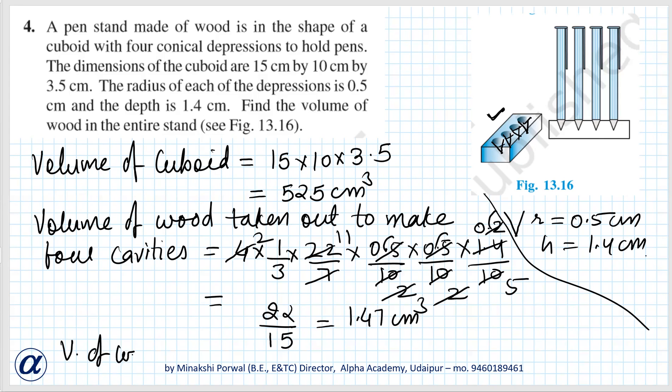Volume of wood in pen stand is equal to volume of cuboid minus volume of four cavities, that is 525 minus 1.47, that is equal to 523.53 cm cube. This is the answer.